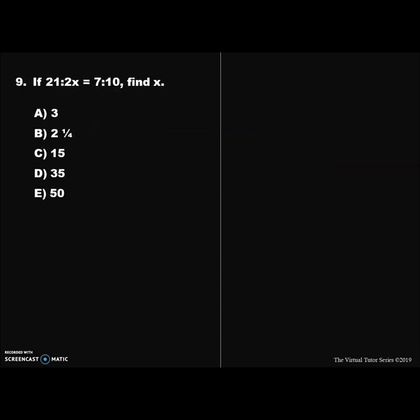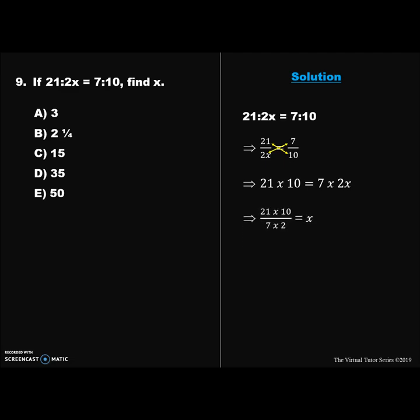Question 9. If 21 is to 2x equals 7 is to 10, find x. Solution: We have 21 : 2x = 7 : 10. This can be rewritten as 21/2x = 7/10. Cross-multiplying gives us 21 × 10 = 7 × 2x. We solve for x by dividing both sides by the product of 7 and 2. Therefore x = 15, and the correct answer is option C.